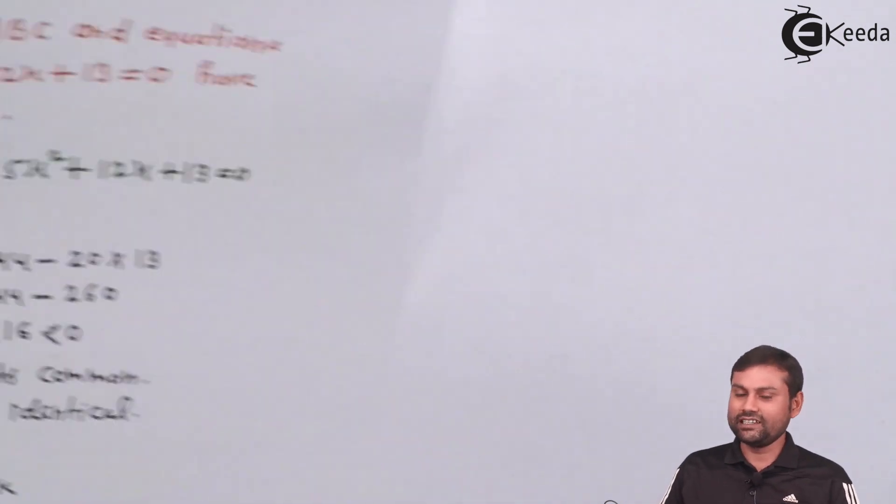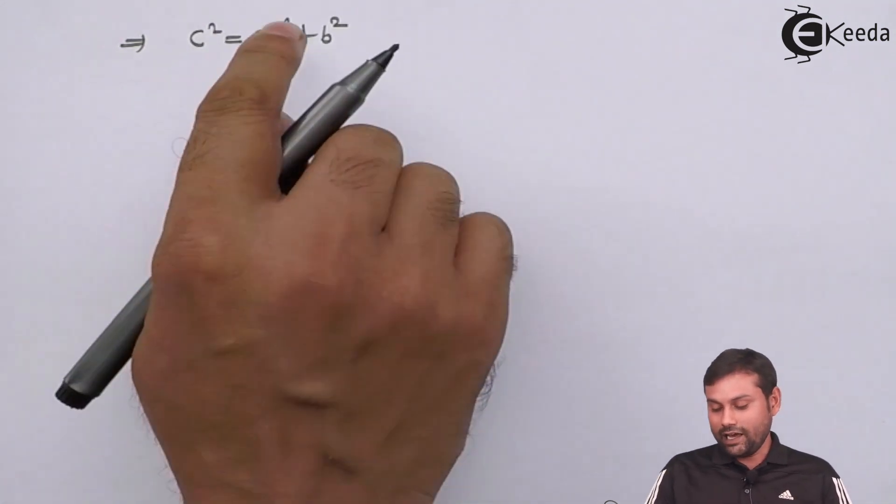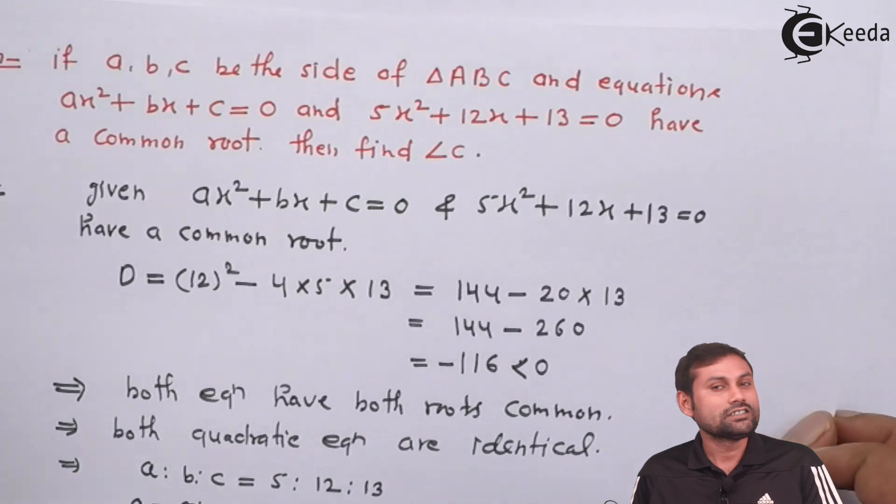So, 169K square is equal to 169K square. That means, C square is equal to A square plus B square. And, they are following Pythagoras theorem.